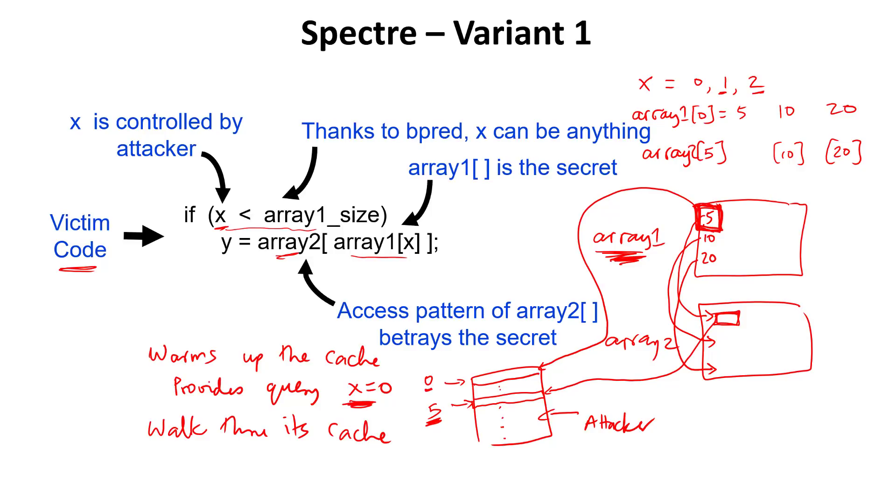What makes this problem even worse is that because processors do out-of-order execution, because they do speculation and branch prediction, I can give a really high value of X over here. And those instructions will eventually be squashed, right? But in the meantime, the processor dives into this piece of code over here because X is usually less than array 1 size, and it can start fetching any location in memory. By giving a really large value of X, I can go well past the bounds of array 1 and I can access any portion of memory that belongs to the victim. Branch prediction makes this problem much worse and it exposes the entire contents of the victim's memory to the attacker.